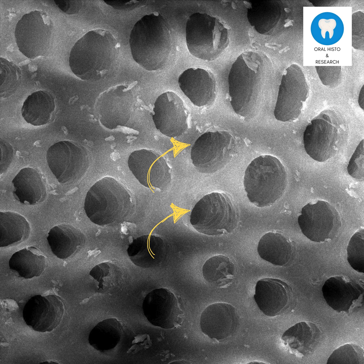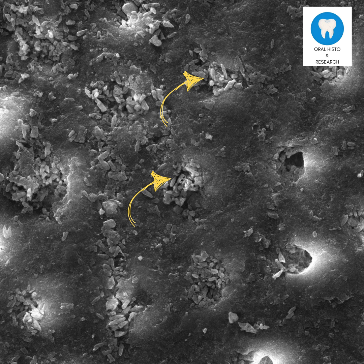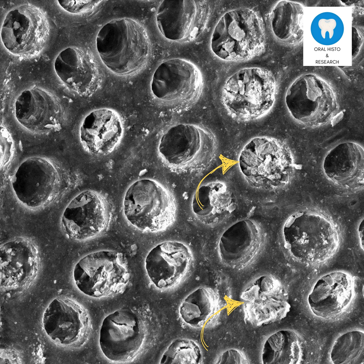Open dentinal tubules can be caused by the removal of enamel due to various reasons. One effective way to occlude these tubules is to use a toothpaste that can effectively block these open tubules. In this scanning electron microscope image, you can see that the tubules are blocked by the toothpaste particles and this can reduce dentin sensitivity.